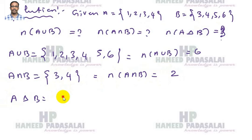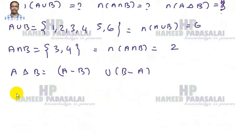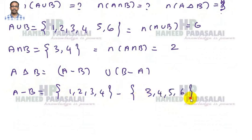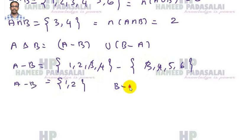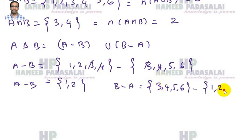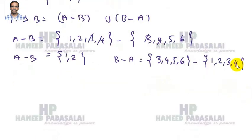A symmetric difference B — what is the meaning? It is A minus B union B minus A. What is A minus B? A means {1,2,3,4} and B is {3,4,5,6}. The common elements {3,4} are removed, so A minus B gives the remaining elements {1,2}. Similarly B minus A gives {5,6}.